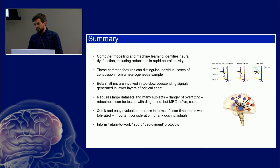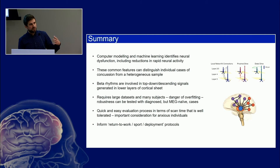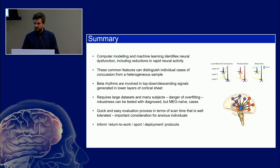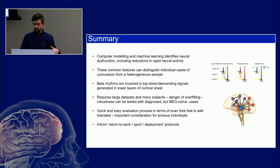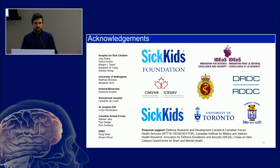Embracing computer modeling, machine learning, and AI has allowed us to identify this neural dysfunction and disruption, including deficits in very fast brain activity. We've pulled out common features that can separate out our groups, which are quite heterogeneous in their clinical sample. It seems to be really driven by these beta oscillations, which are involved in sending top-down descending signals. We do require large data sets — we have about 50 subjects at the moment and are always recruiting. This is an incredibly easy, well-tolerated scan for kids and adults, taking about five minutes, with no gels or pastes, and it's not noisy or claustrophobic like MRI. In the future, we hope to use this with return-to-work, support, and military deployment protocols.